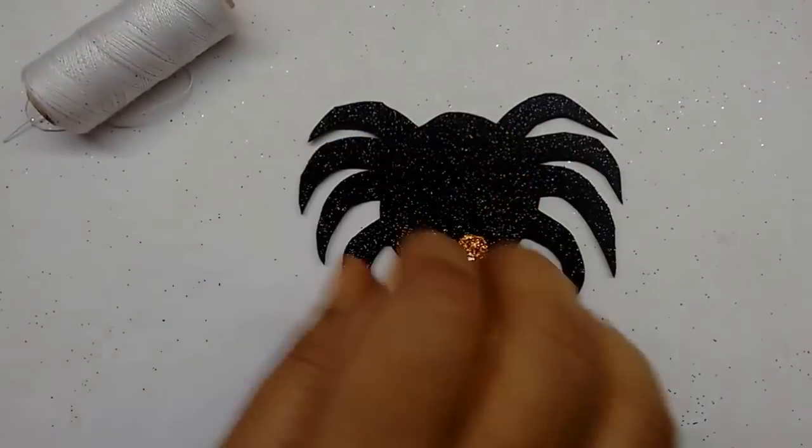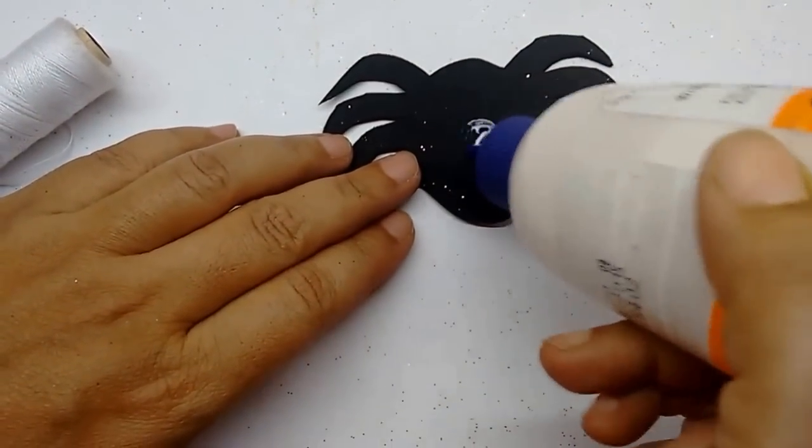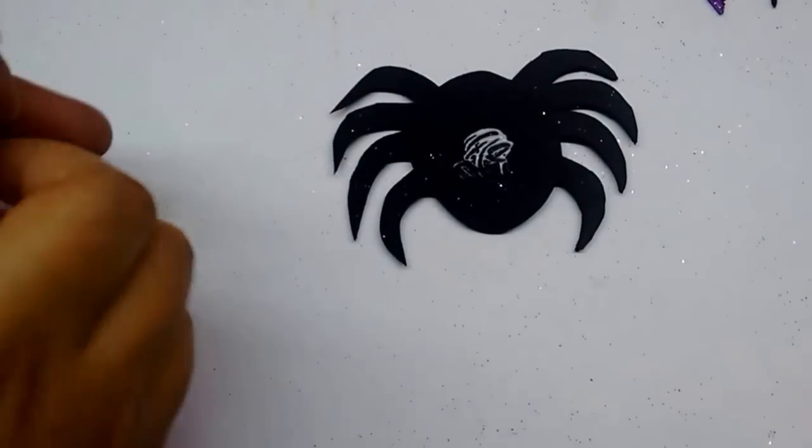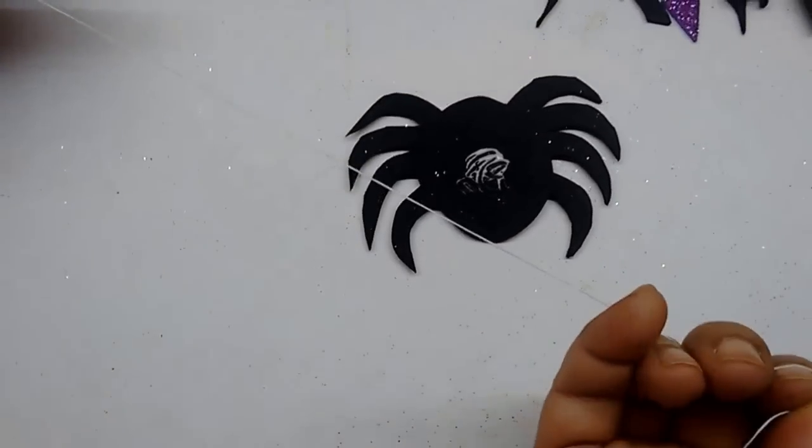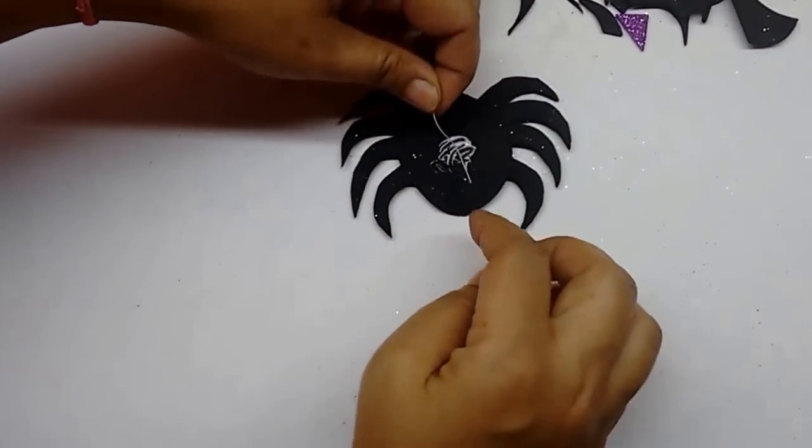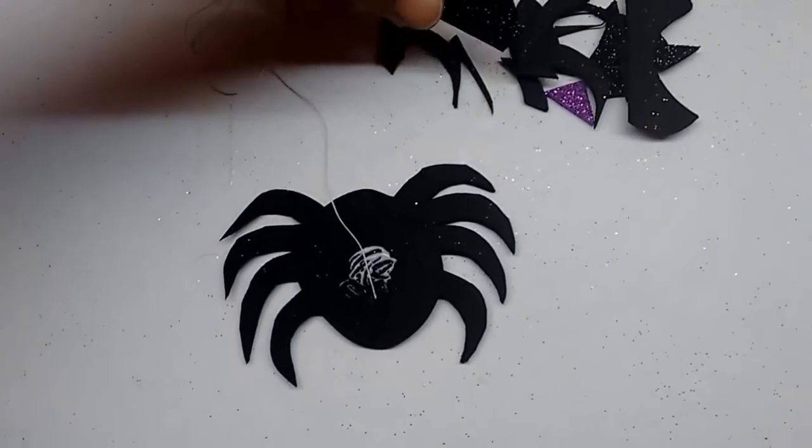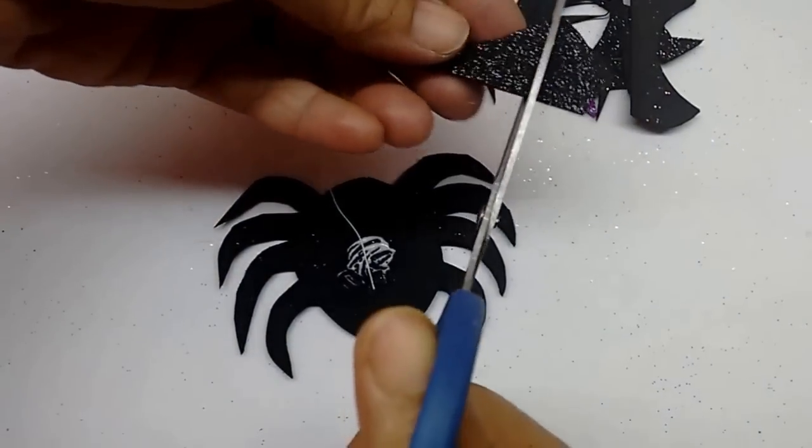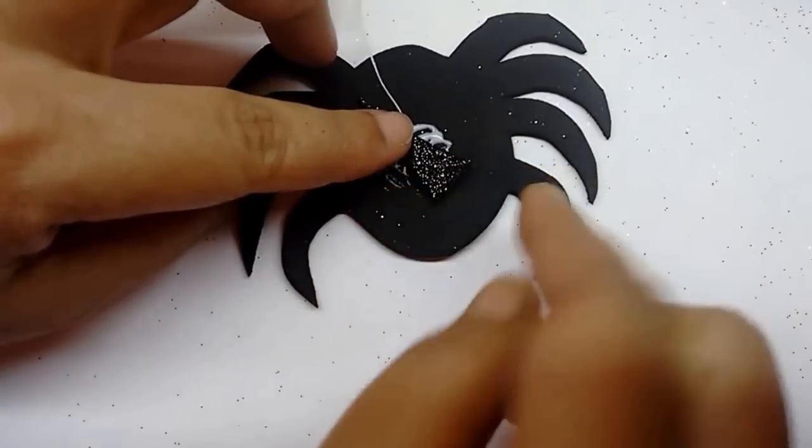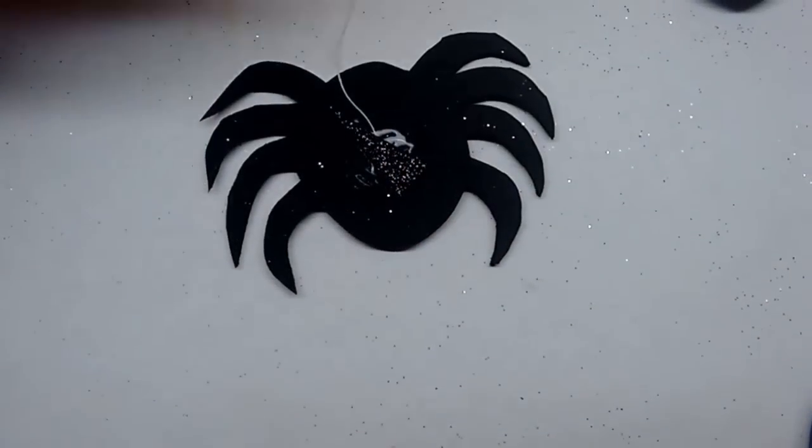Now take the spider and first turn it around. Put some glue on it. Take a piece of thread—take strong thread. I have taken white in color, you can take any color that you like. And then just put it on the glue. Now these are pieces of foam that were left while I was cutting the spiders and bats. So just cut out a piece and stick it on top. And let it dry.